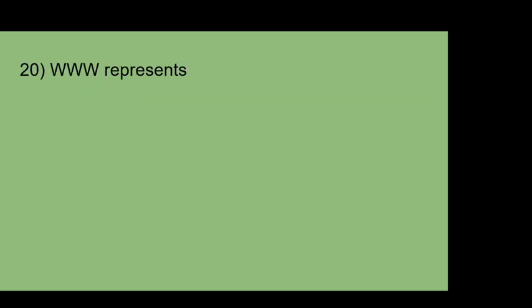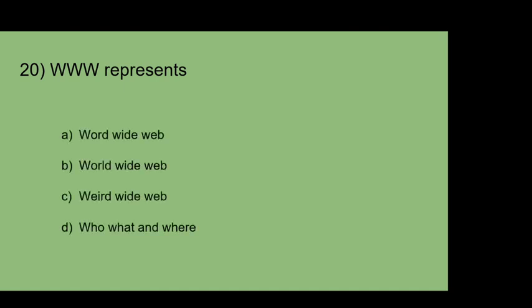WWW represents: A: World Wide Wave. B: World Wide Wave. C: Weird Wide Wave. D: Who, What and Where. The answer is World Wide Web.